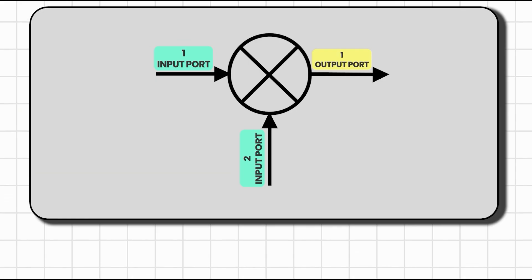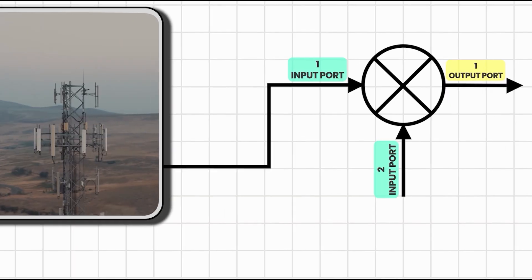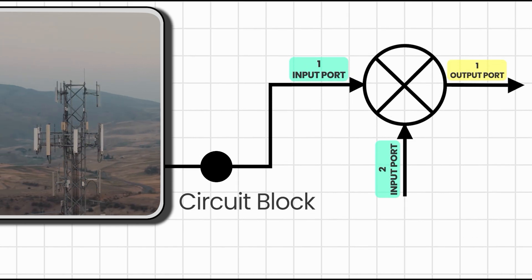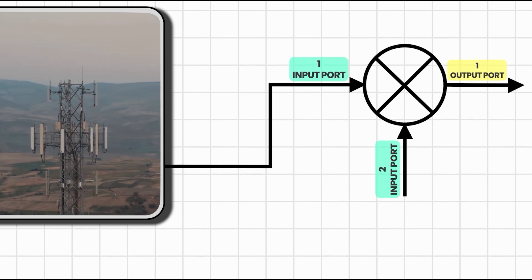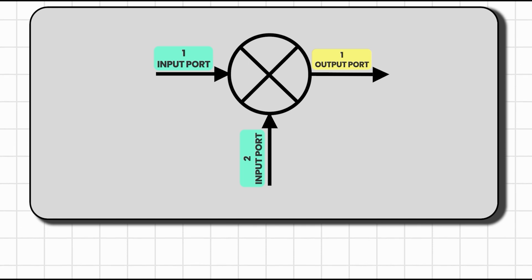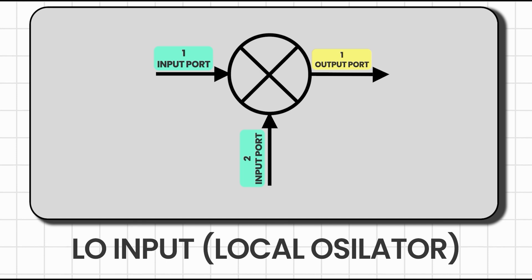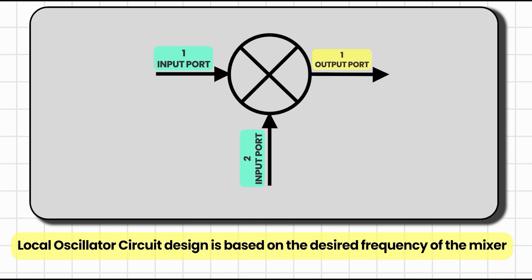The first port is the RF input signal coming from the antenna. Between the mixer and antenna there will be other circuit blocks as well — for example, amplifiers, filters, etc. — but for now we will focus on mixers only. The second port is the local oscillator input. The local oscillator circuit introduces a frequency based on our output requirement, and we design it based on the desired output frequency of the mixer.